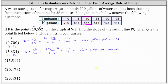Point Q changes again, where T₂ = 15 and V₂ = 514. The slope of the secant line equals the change in volume divided by the change in time, which is (514 − 552) ÷ (15 − 10). Simplifying: −38 ÷ 5 = −7.6 gallons per minute.